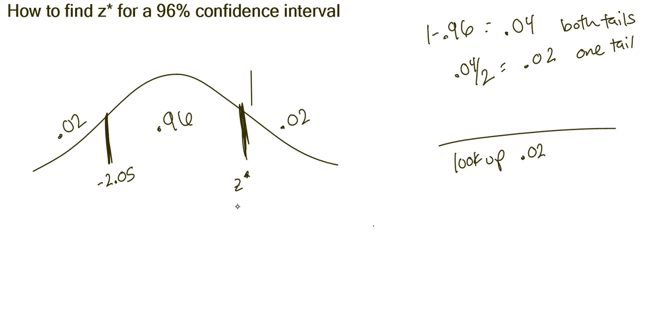Now we always want a positive value, so we could come over here and say by symmetry, this z star would now be positive 2.05. So if you look up .02, you get z equals negative 2.05.